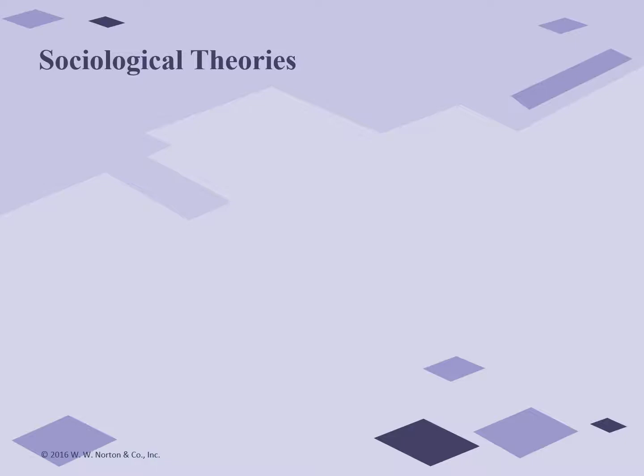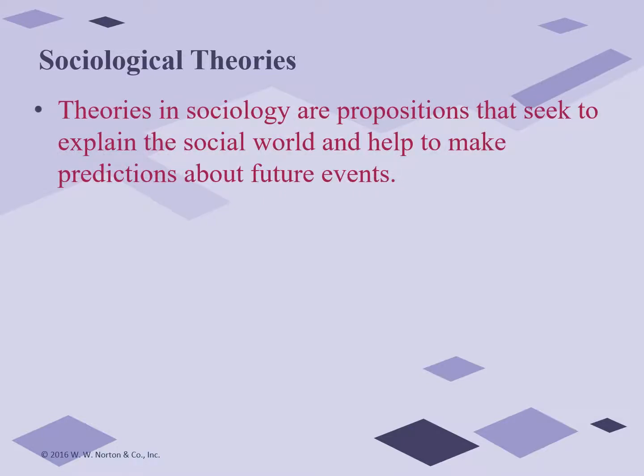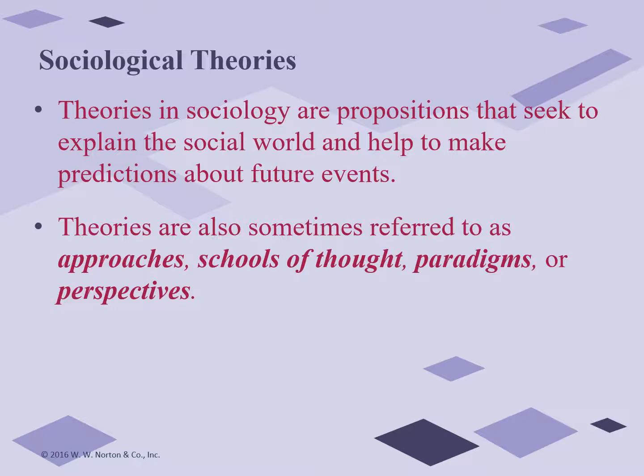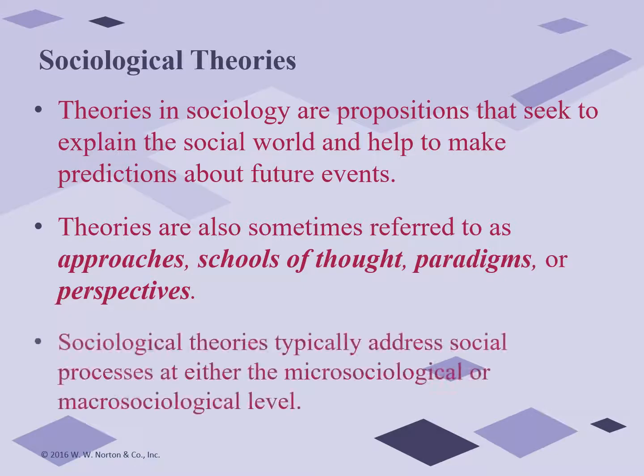Your book mentions the poem about the blind men and the elephant, suggesting that there are different ways of approaching a specific topic, and that considering many different perspectives or theories will lead to the best understanding. Theories in sociology are propositions that seek to explain the social world and help make predictions about future events. We also refer to them as approaches, schools of thought, paradigms, or perspectives, and they typically address social processes at either micro sociological or macro sociological levels.